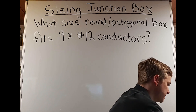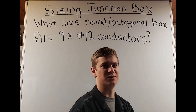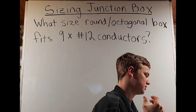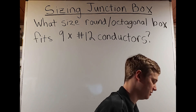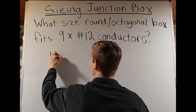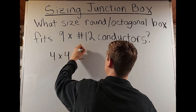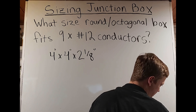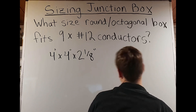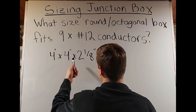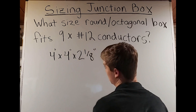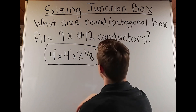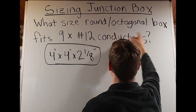Next to nine number-12 conductors for a round/octagonal box, it says four by two-and-one-eighth inches. This is giving us the volume — when only two numbers are shown, the first number is doubled to give the actual box dimensions. So this is really a four by four by two-and-one-eighth inch box. We can fit nine number-12 conductors in a four by four by two-and-one-eighth inch round/octagonal box.